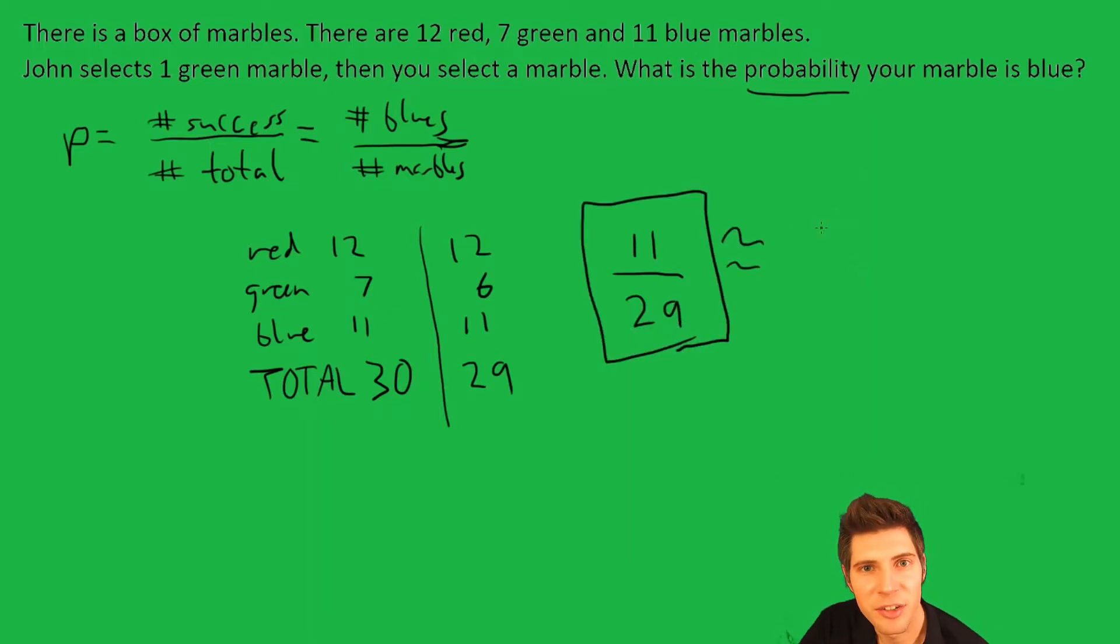So if you want to know what this is as a percent or a decimal, plug it into a calculator, just do 11 divided by 29, which would be 0.3793103, etc. And for a percent, move the decimal two points, and I get 37.93%. So these two are approximations. This one's exact.